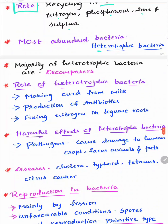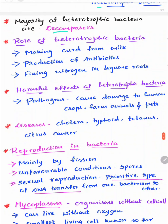The most abundant bacteria are heterotrophic bacteria, and the majority of them are decomposers. They have certain roles in our environment such as making curds from milk, production of antibiotics, and fixing of nitrogen in leguminous roots. They also have harmful effects — many are pathogens causing damage to humans, crops, farm animals, and pets, causing diseases such as cholera, typhoid, tetanus, and citrus canker.